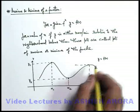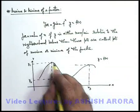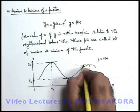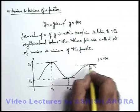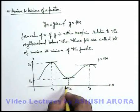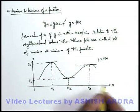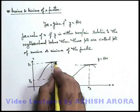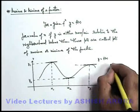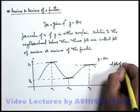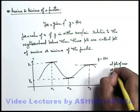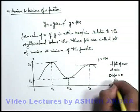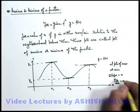Now in this situation there is a common thing between these three points. If we just draw the tangent at these three points, you can see that the tangents are horizontal — making an angle of zero degrees with the x-axis. So at all these points we can state the slope of the graph is equal to zero, or we can write dy/dx = 0.